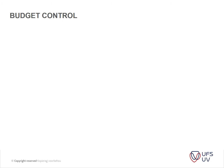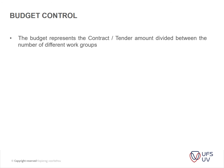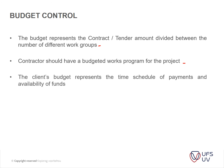Continuing with budget control: the budget represents the contract tender amount divided between a number of different work groups — basically the different sections of the project. The contractor should have a budget works program for the project, with different budgets allocated to different sections. The client budget represents the time schedule of payments and availability of funds. Clients might have financial years with required spending targets, so a cash flow is very important for this.